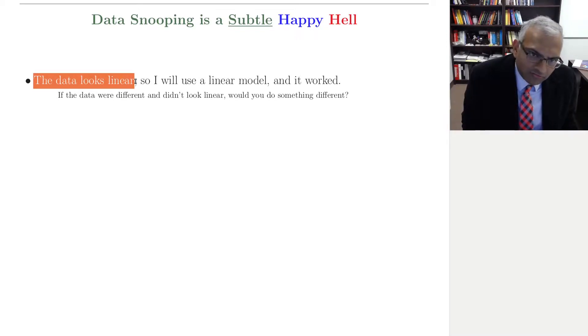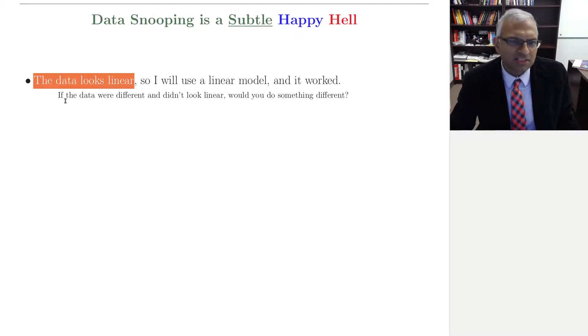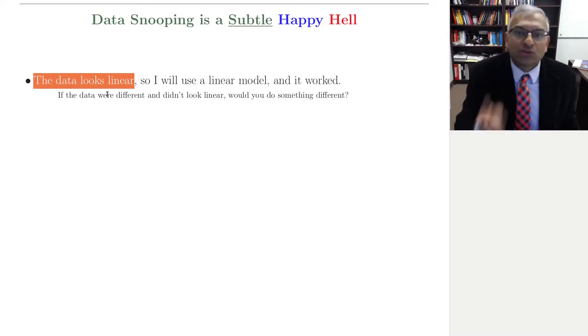Another way of diagnosing that data snooping is occurring is if the data were different and didn't look linear, would you do something different? And if the answer is yes, then data has affected this choice, and you need to pay a price for this choice.